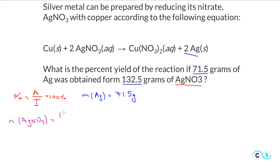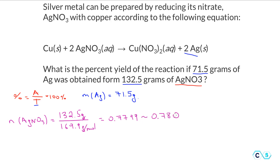The moles of silver nitrate are equal to 132.5 grams divided by the molar mass of silver nitrate, which is 169.9 grams per mole. If we divide, we get 0.7799 moles, which I'll round off to 0.78 moles.